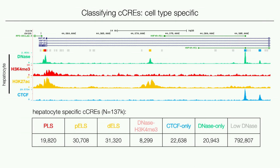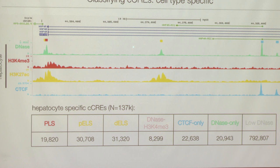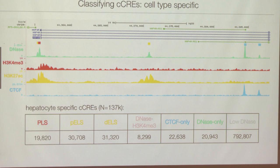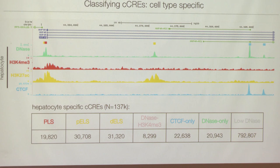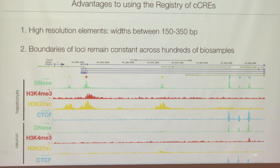Now that we have this collection — we call it a registry — we can classify their activities in specific cell types. For each cell type, such as a hepatocyte (liver cell), you can classify the nearly one million CCREs into different categories. Most of them are not active in any given cell type — only a small subset are actually active — which is why different cell types have different phenotypes and functions. You can do this across hundreds to thousands of biosamples accumulating rapidly in the ENCODE consortium, and neurons show very different active CCREs from hepatocytes.